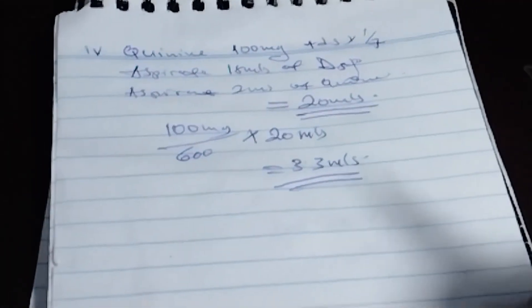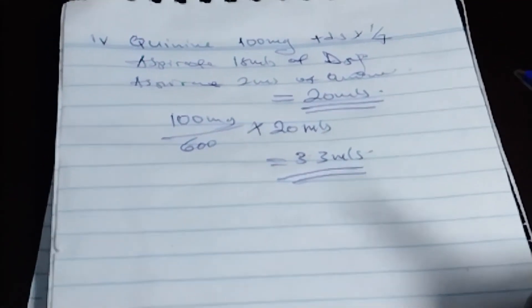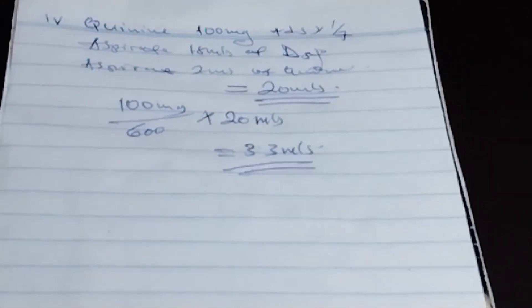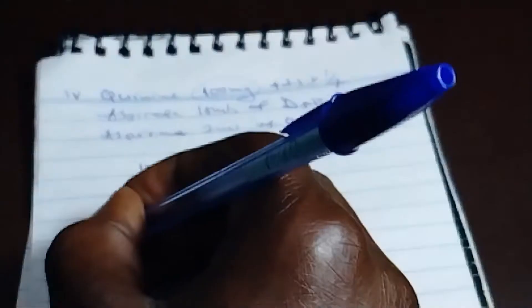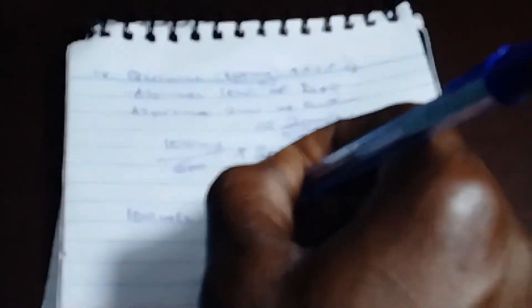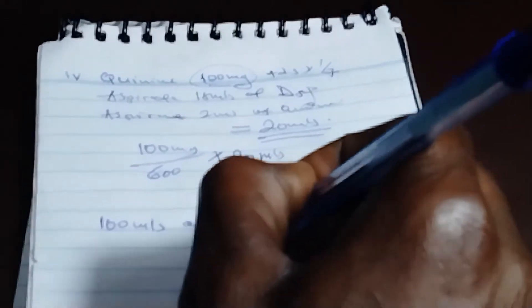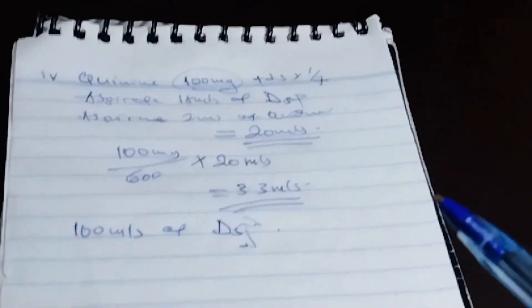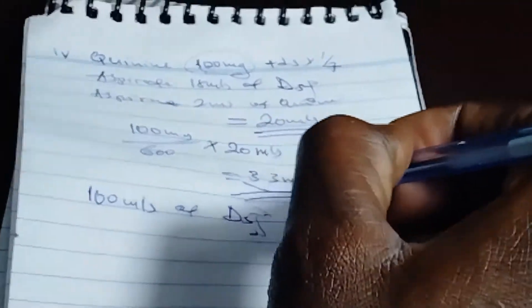But quinine we don't give it direct. We put it in dextrose 5%. Others may prescribe 10%. We are going to get 100 mL of dextrose 5% in the burette. Then we aspirate.